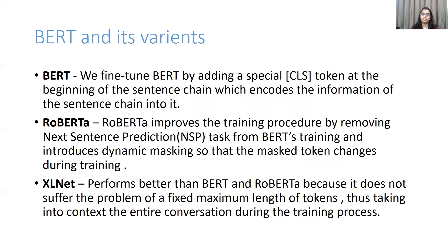We fine-tune BERT by taking a pre-trained model, adding an additional untrained classifier layer, and training this new model for our task. This is done because the pre-trained transformer model weights already encode a lot of information about language, which is helpful in cases where datasets are small. For the sequence classification task, we use a special CLS token at the beginning of our sentence chain, which encodes the information of the sentence chain. This token is used in the final layer to classify whether a sentence chain belongs to the major topic or the REST class.